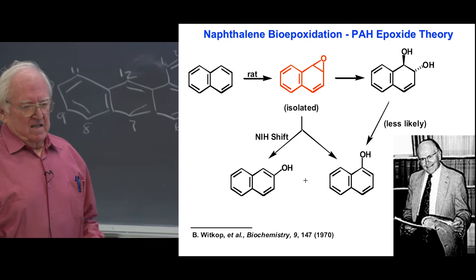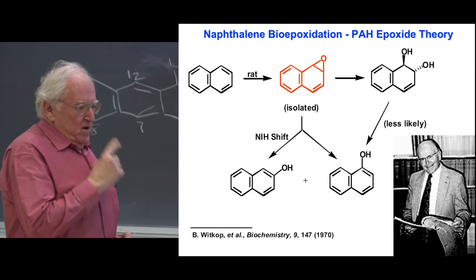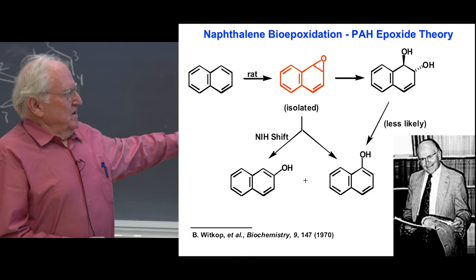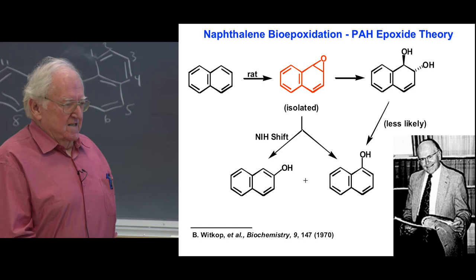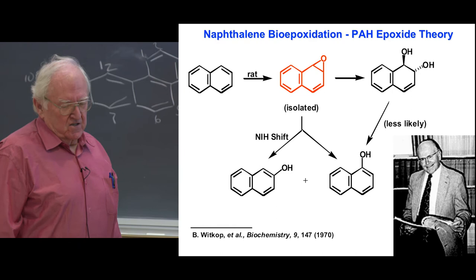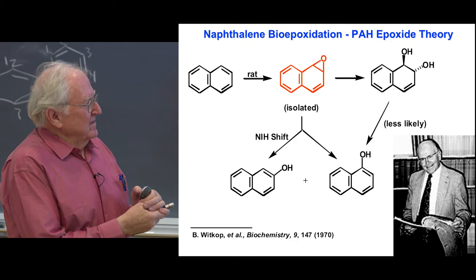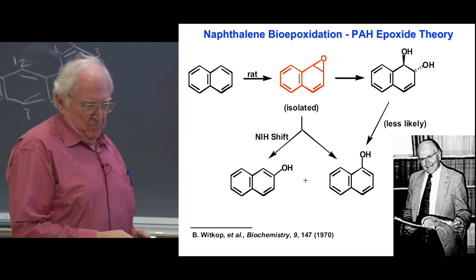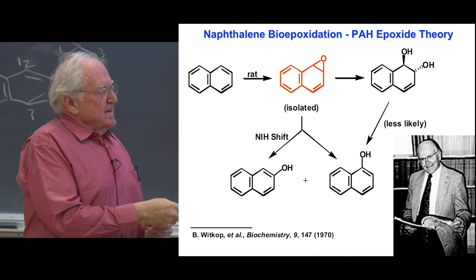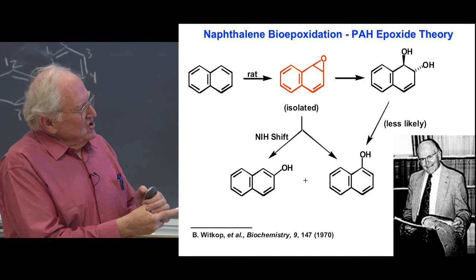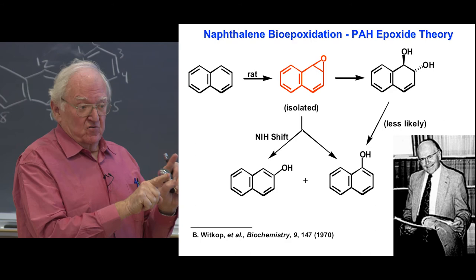Then in 1970, at NIH in Bethesda, Maryland, Bernie Whitcock discovered — looking at compounds including the simple naphthalene — that when given to a rat, you can isolate the epoxide, naphthalene epoxide. The first time anybody had found a metabolite of any polycyclic aromatic hydrocarbon. He found it undergoes the NIH shift, where it goes directly to either the 2-hydroxy or 1-hydroxynaphthalene. Epoxides can break open due to ring strain, the proton is lost, giving the naphthol — hydroxynaphthalene. Or you can get hydration — epoxides open in a trans fashion to give a transdiol.